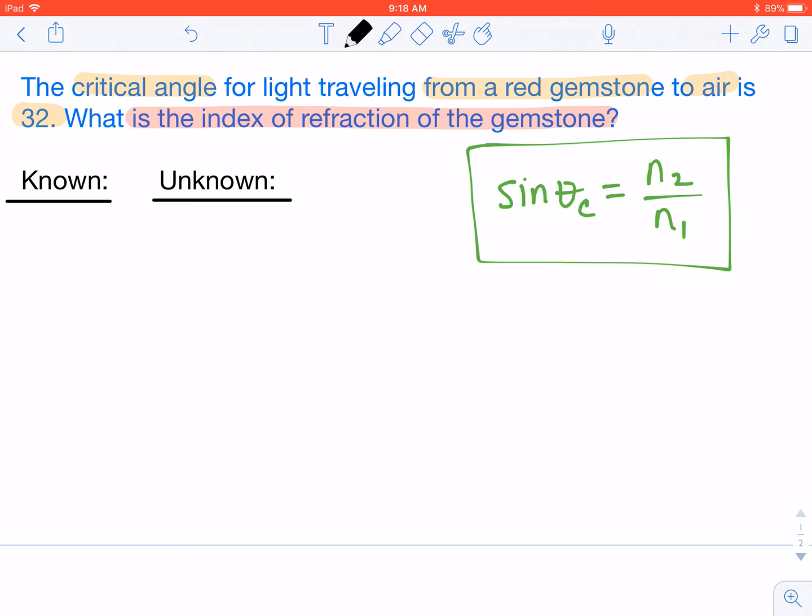A couple things. We know our critical angle this time, so theta C equals 32 degrees. We know air is our second substance, so N2 is 1.0. We're trying to find N1 because we're trying to find the index of refraction of our gemstone.